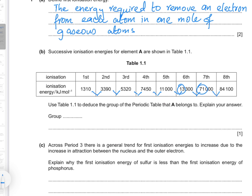All the other differences are similar or follow a pattern. This first large difference indicates that A belongs to Group 6, because A has six electrons in its outermost or valence shell. When all six valence electrons are removed, the seventh electron is removed from a shell closer to the nucleus, requiring a greater amount of energy to overcome the attraction between the nucleus and the electron.